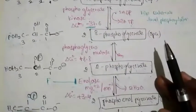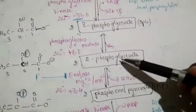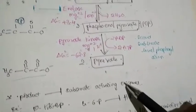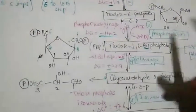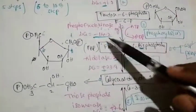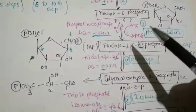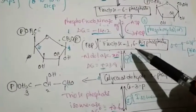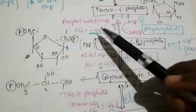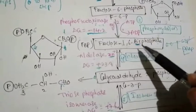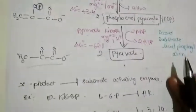In many reactions, the product inhibits the substrate-activating enzymes. For example, in the preparatory phase, fructose-1,6-bisphosphate inhibits the enzyme phosphofructokinase. Fructose-2,6-bisphosphate does not inhibit the same enzyme; it is the fructose-1,6-bisphosphate that inhibits the substrate enzyme.